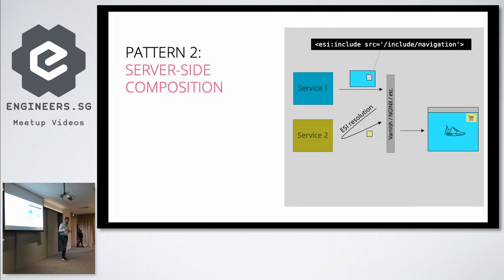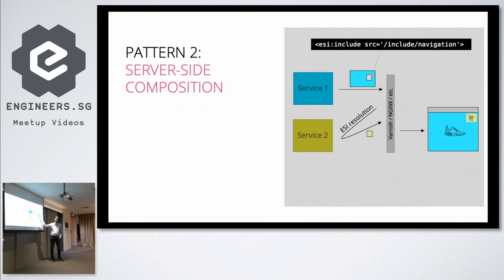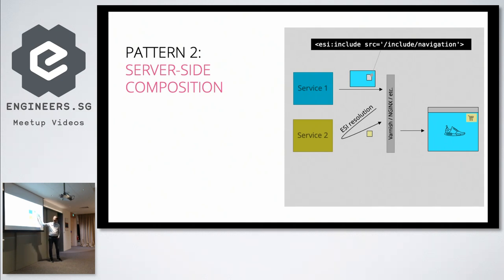What is more common these days is the fourth pattern: client-side rendering. It's not only composing at the client side but also rendering at the client side. It looks very similar — service one returns a lot of HTML and some JavaScript. But the JavaScript knows it needs data from somewhere else. Rather than depending too much on the data directly — which we've seen can lead to big problems — it fetches some JavaScript from the other service. That JavaScript is then run here, and it knows what JSON data to get to actually render the HTML in the web browser.